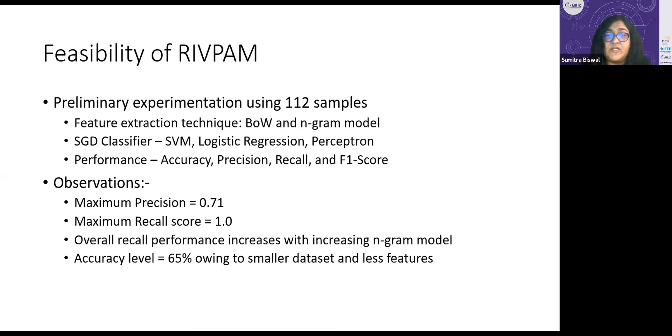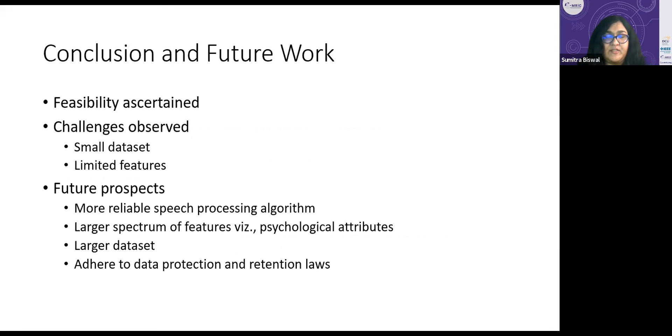It was understood from the feasibility of the RIVPAM observations that RIVPAM is feasible because we have observed precision of 0.71, which is maximum precision, and a maximum recall score of 1. It has also been observed that the recall performance increases with increasing n-gram model. That is, when the n-gram model goes on increasing, like a lot of sequential words are taken into analysis, the detection analysis is enhanced. The recall score, that is the sensitivity or the accuracy of the model towards the correctness, increases. But accuracy level unfortunately is 65 percent, which is highly attributable to the small number of dataset as well as less features that have been used.